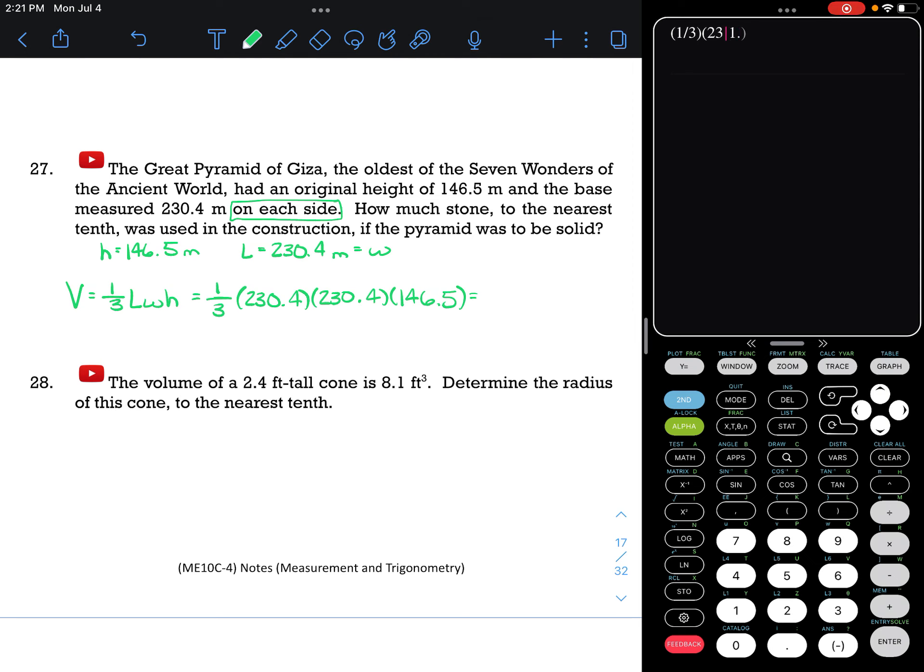So I can multiply those numbers together. I'll have 1/3 times 230.4 times 230.4 again, and then I can multiply that by 146.5. That gets me a really big number: 2,592,276.48 cubic meters.